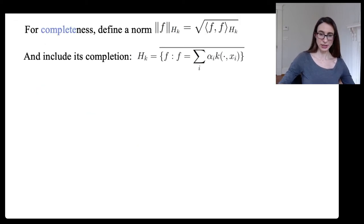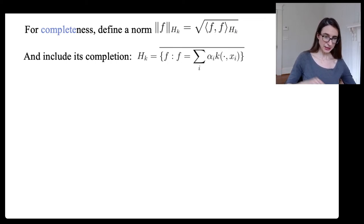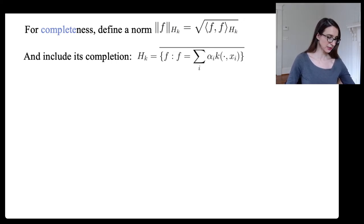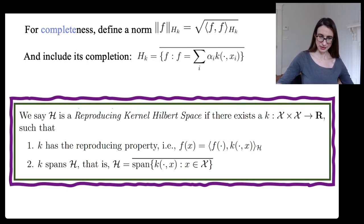Completeness is straightforward — a Hilbert space is a complete inner product space. All you have to do is define the space to include all limit points by defining a norm and then defining the space to include the limits of all sequences in that norm. Elements of the space consist of arbitrary sums of weighted kernels centered at any points you like.